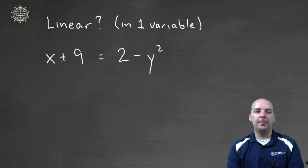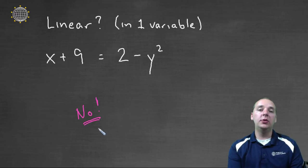Here's our last example. We have x plus nine equals two minus y squared. And I see right off the bat, this one's a no. This one's actually a no for a variety of reasons. So you tell me, what are the reasons this is not linear?